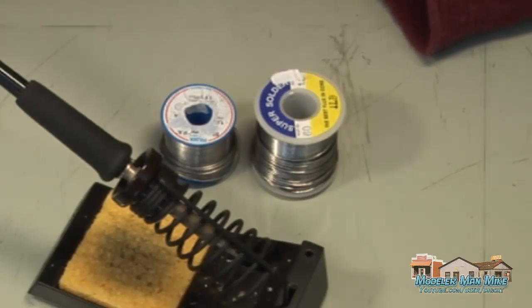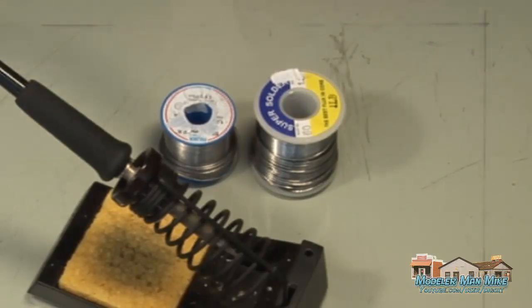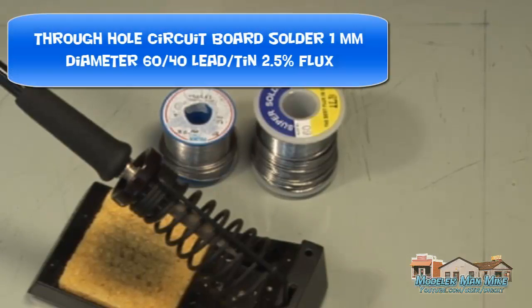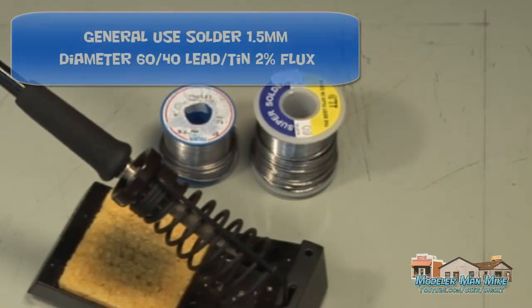My smaller diameter, the 1mm, is a 2.5% flux, and my 1.5mm is a 2% flux.